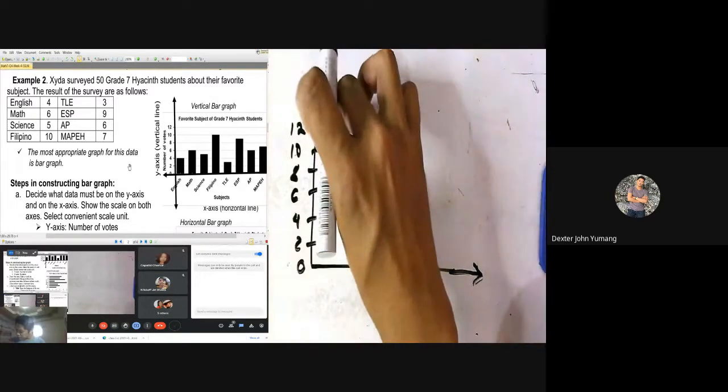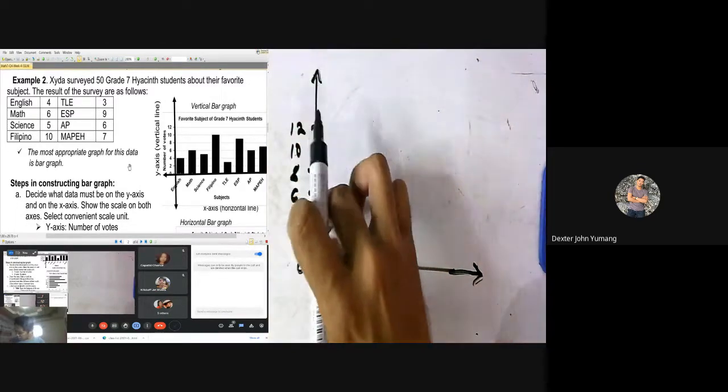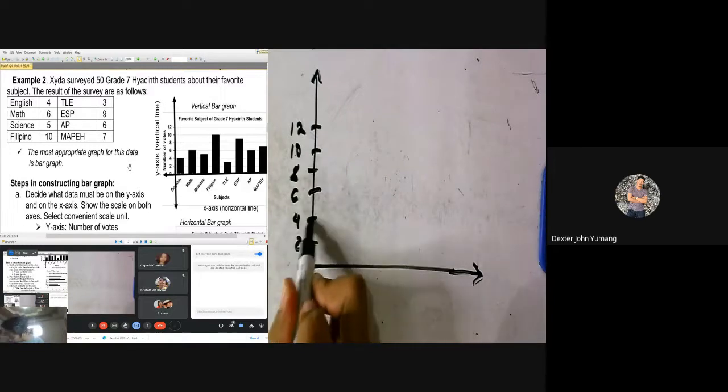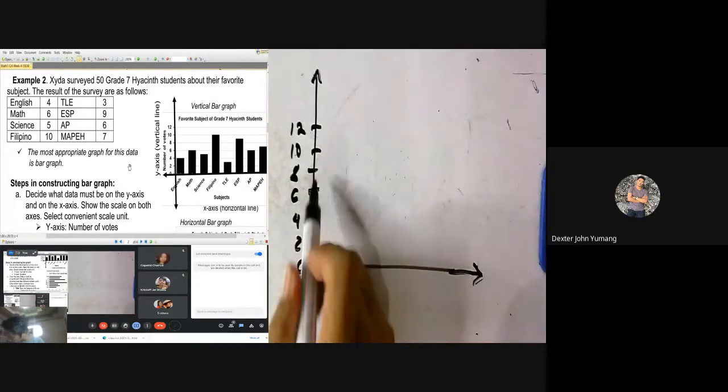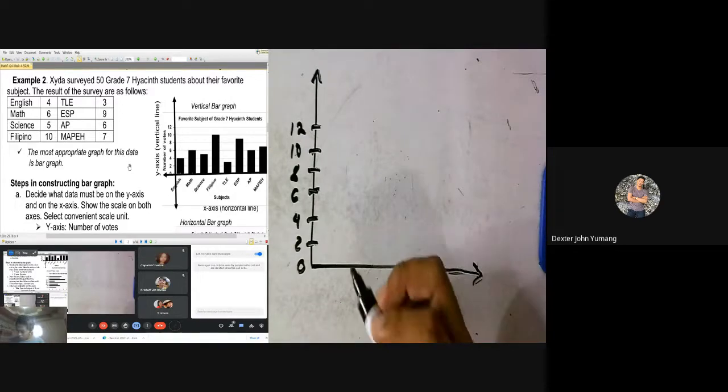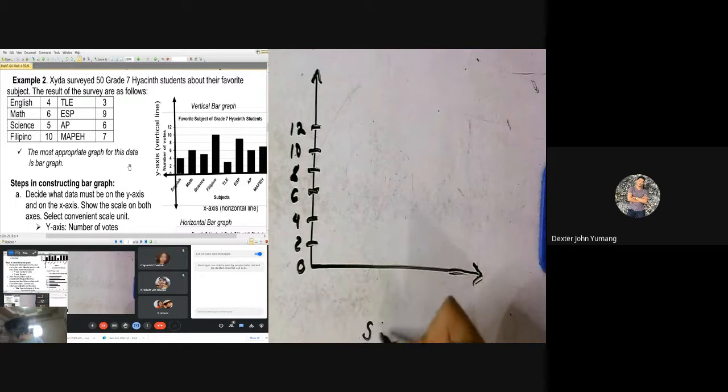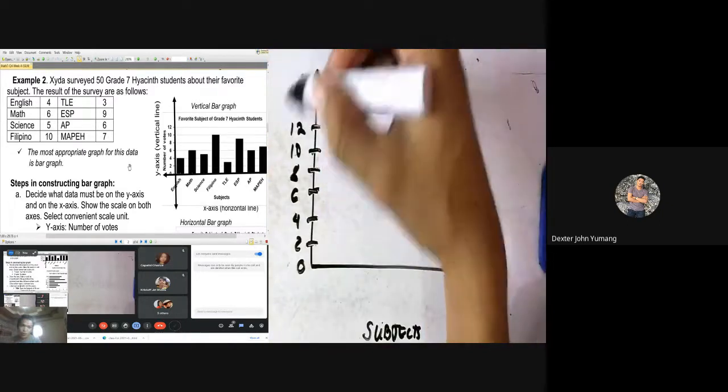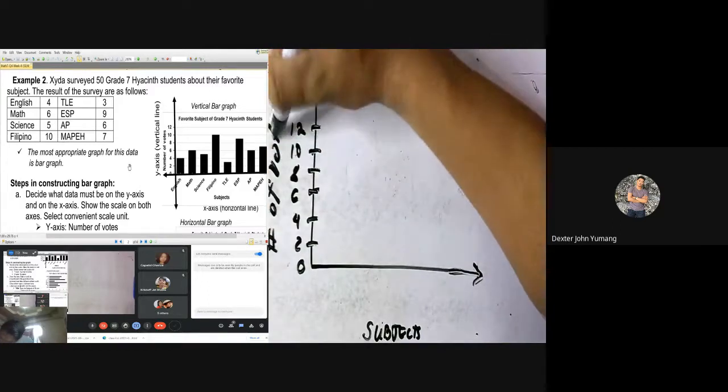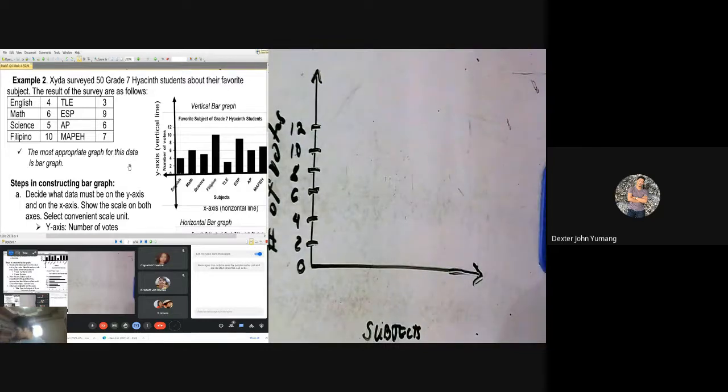Next, you have to make sure the spaces from 12 to 10, these mini bars, should be equal, not different. You have to make sure the writing is even. If it's too much, just erase. To make it uniform and straight line. In this case, I bent it because I don't have a ruler in the classroom. Next, we'll put the subjects at the bottom. So the first subject is English. We'll write the word 'subjects' here. On the other side, for 0, 2, 4, 6, 8, 10, 12, we call this the number of students or number of votes.